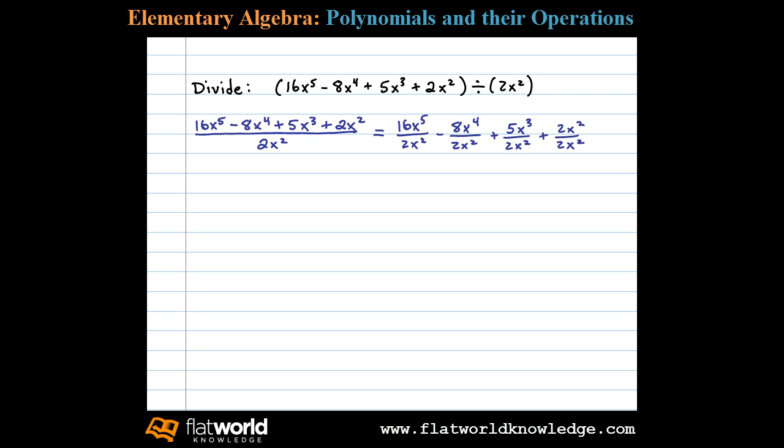After doing this, we can simplify each term individually. In this case, 16 divided by 2 is 8. X to the fifth divided by x squared is x to the 5 minus 2 power. Remember the quotient rule: when dividing like this, we subtract exponents.